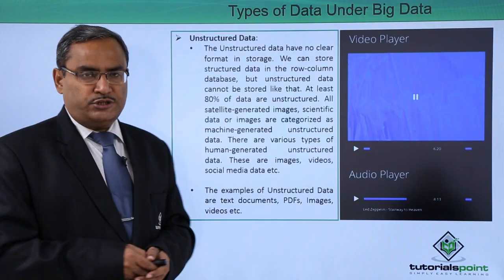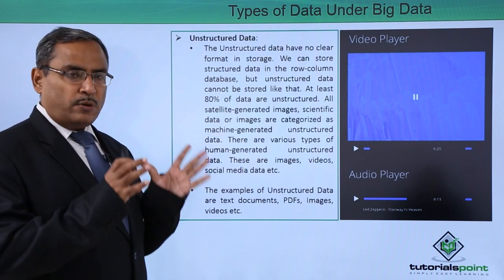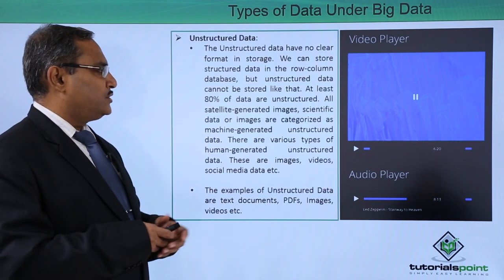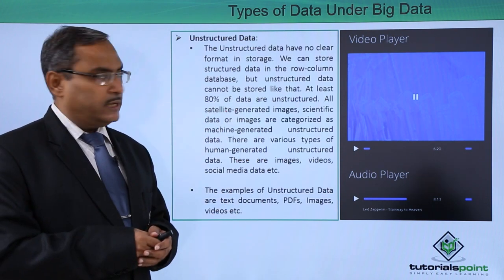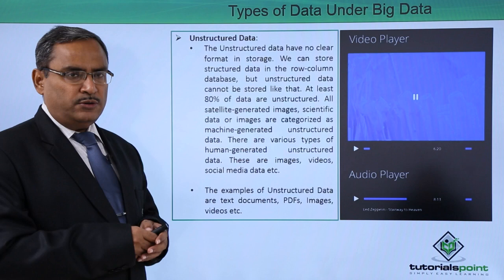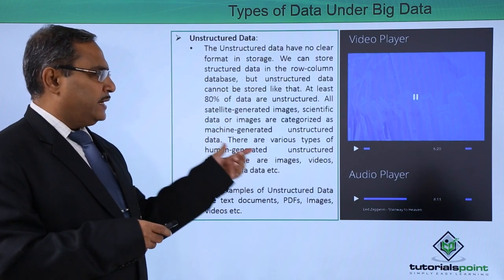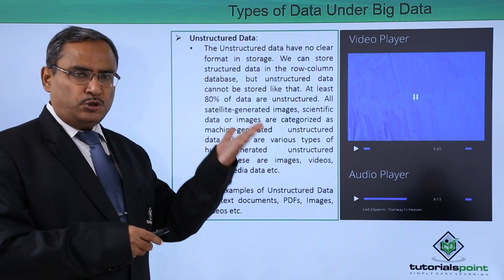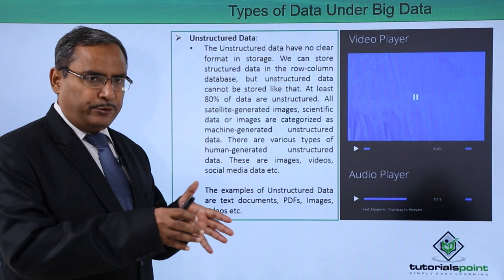Now let us concentrate on unstructured data. Unstructured data have no clear format in storage — we can store structured data in rows and columns in a database, but unstructured data cannot be stored like that. At least 80 percent of the data existing nowadays is unstructured. All satellite-generated images and scientific images are categorized as machine-generated unstructured data.